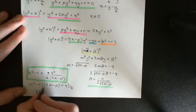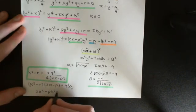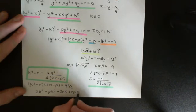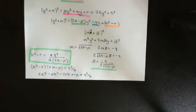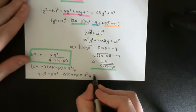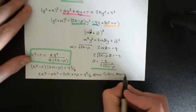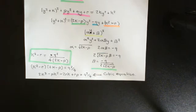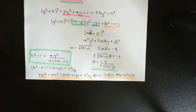Expanding this out, we get 2k cubed minus pk squared minus 2rk plus rp equals q squared over 4. So basically, this is where I said we would reduce the problem down to finding the solution for a cubic equation. Here we have a cubic equation to solve, and we know that cubic equations can be solved using Cardano's formula. If you don't know Cardano's formula, I have a video on it in my playlist on classical algebra. So cubic equations can be solved — this cubic equation can be solved.